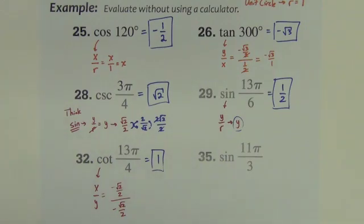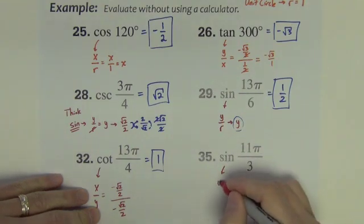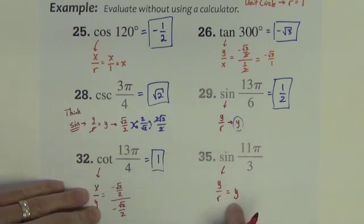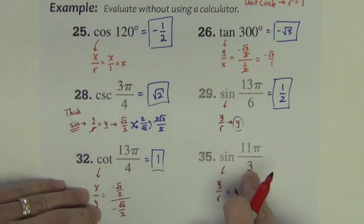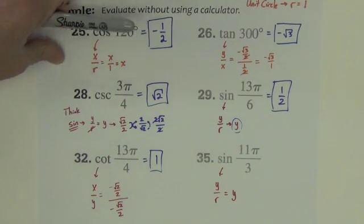Last one. Sine of 11 pi over 3. 11 pi over 3. Well, first of all, it's sine, which is y divided by r, which is just going to be the y value. So I need the y coordinate of the point at 11 pi over 3. I will bring that back again so we can do it together.